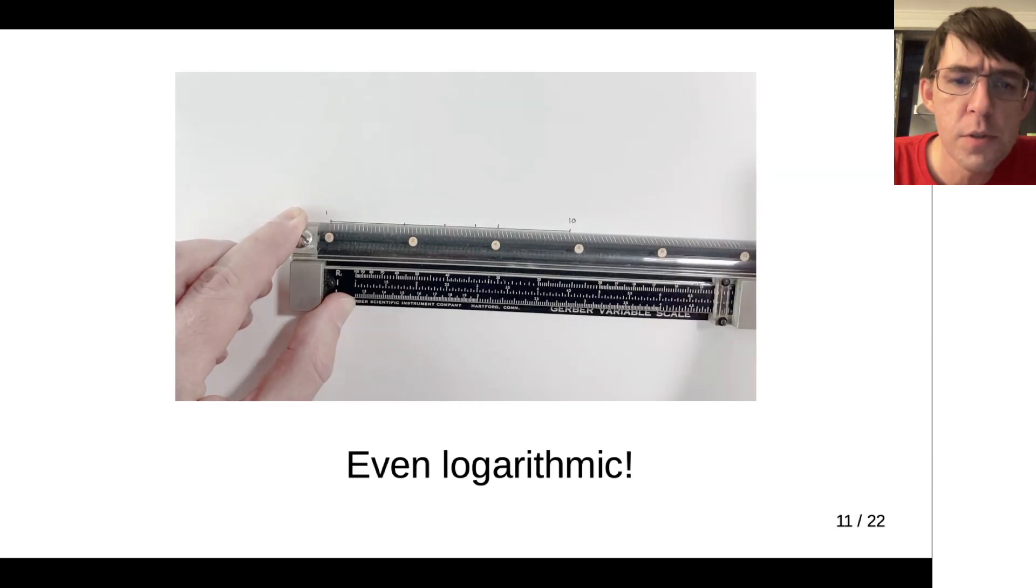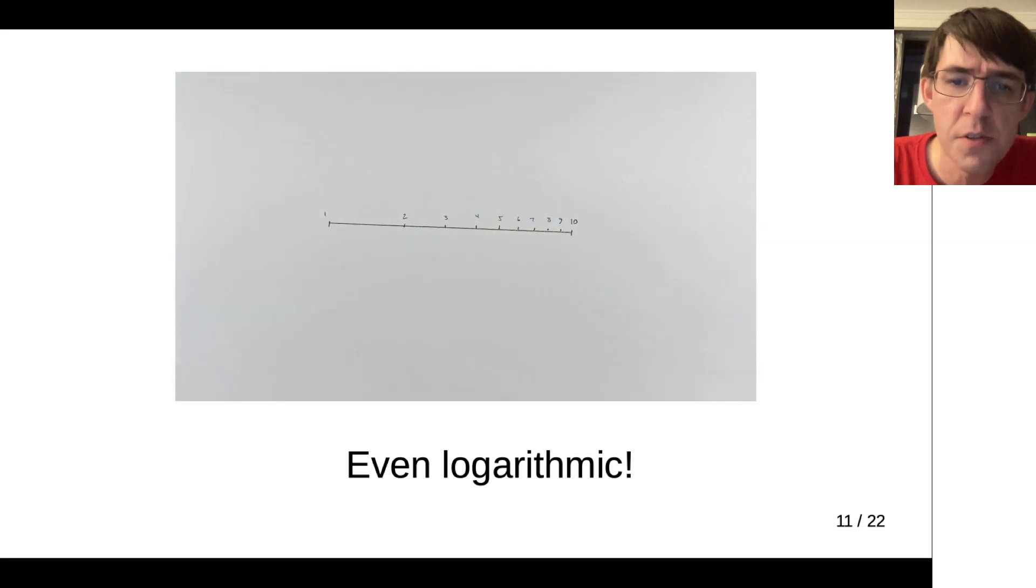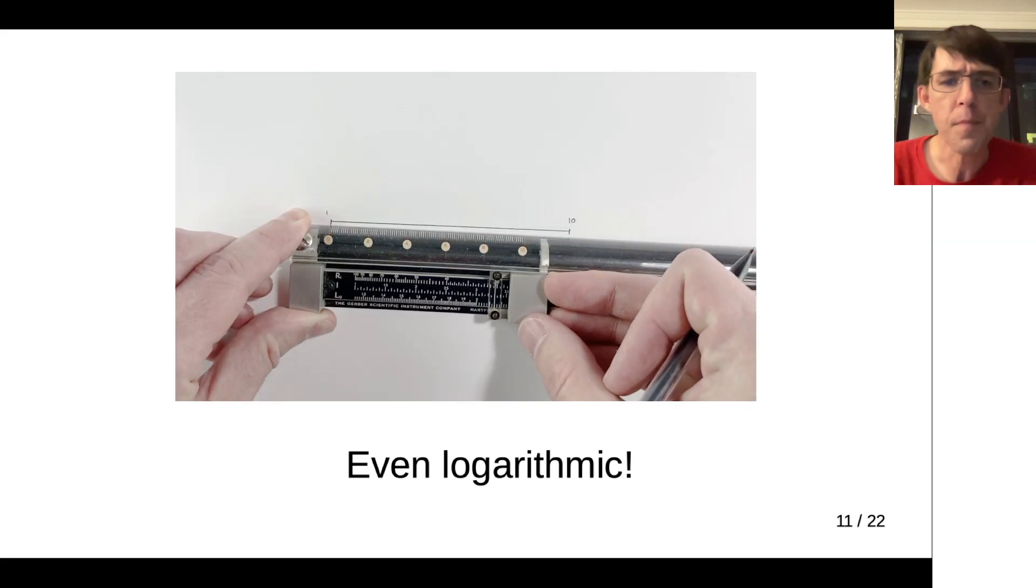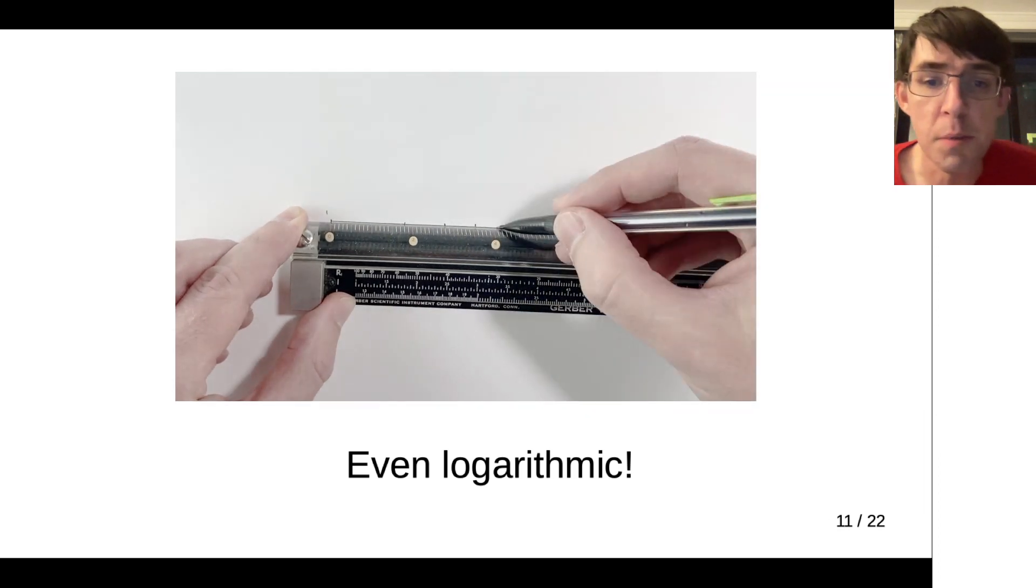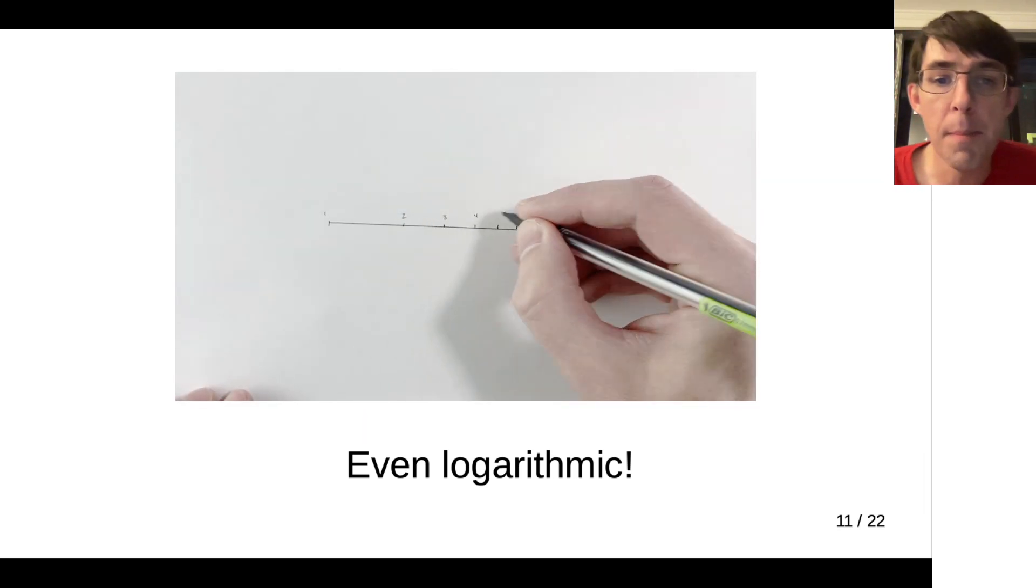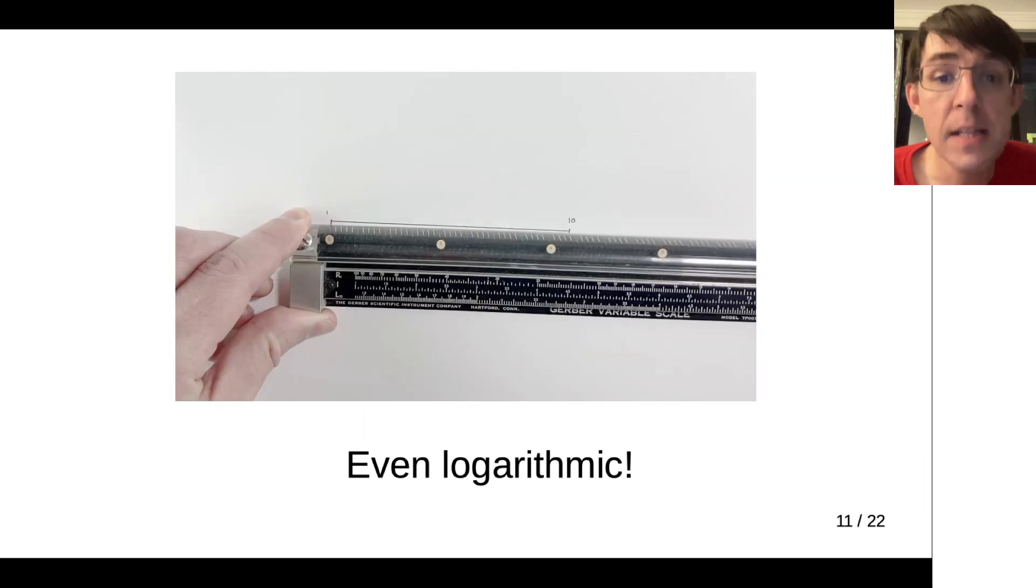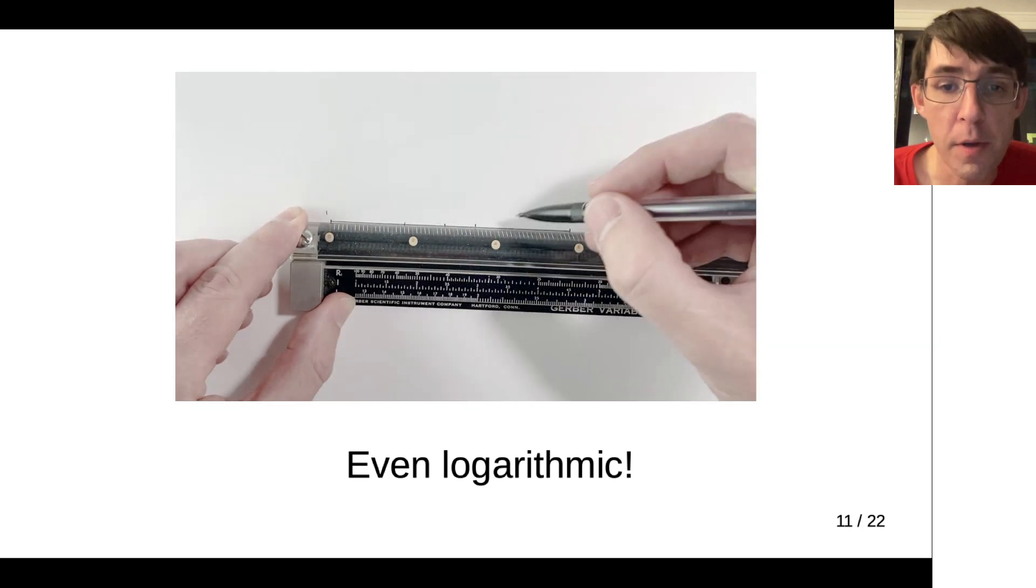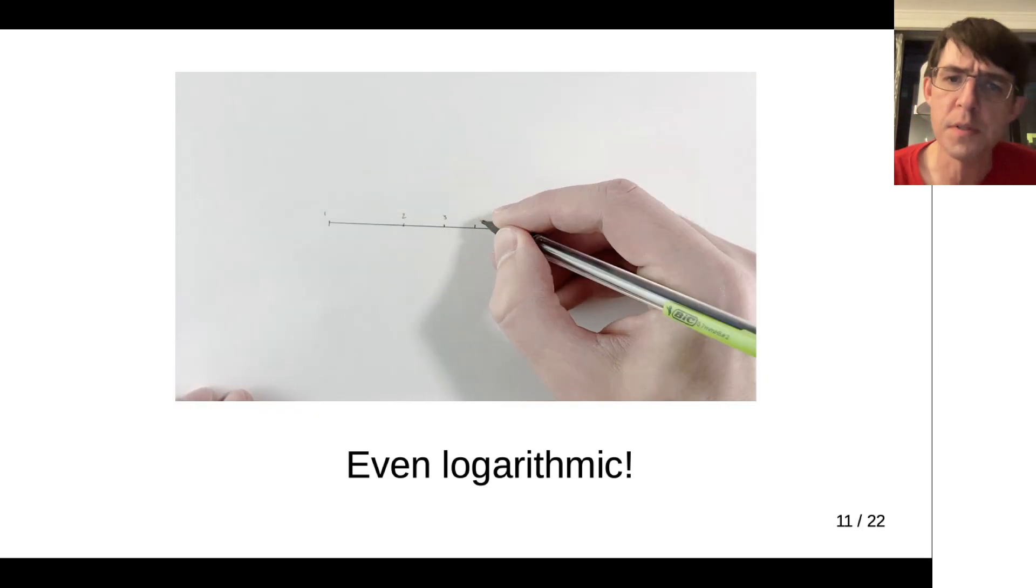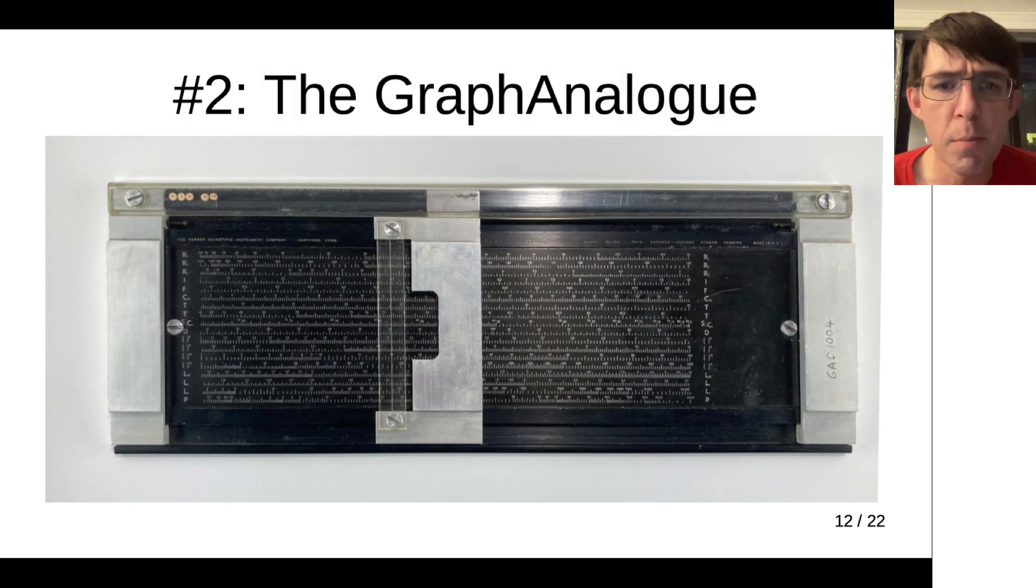Here's another one. Actually, the variable scale, if you look closely, you can see there's a few different marked scales on the device itself. One of them is a logarithmic scale, and there's a procedure by which you can mark out evenly spaced logarithmic markings rather than linear markings. So you can do some pretty fancy stuff with this, the Gerber variable scale.